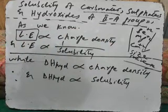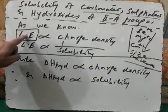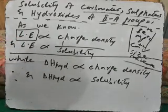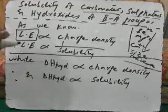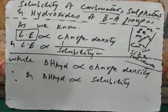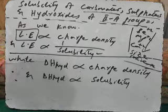When the cation and anion have higher charge and smaller size, their lattice energy will be greater. When lattice energy is greater, positive and negative ions will not separate easily. When ionization does not happen easily, solubility decreases. This means lattice energy and solubility are inversely related.